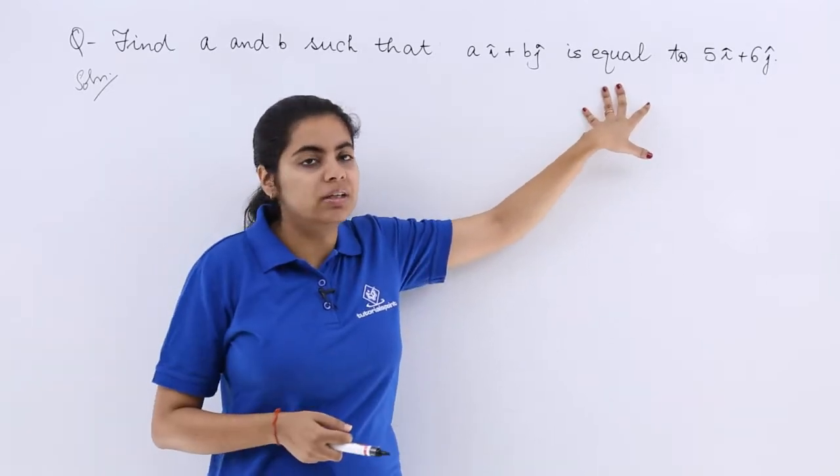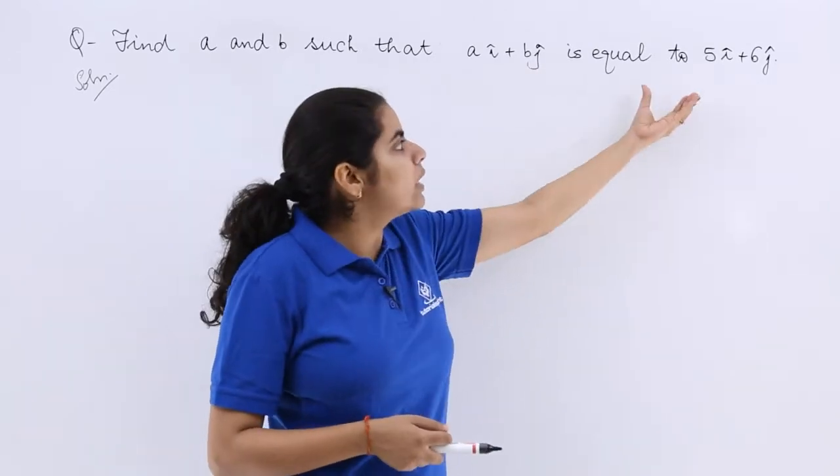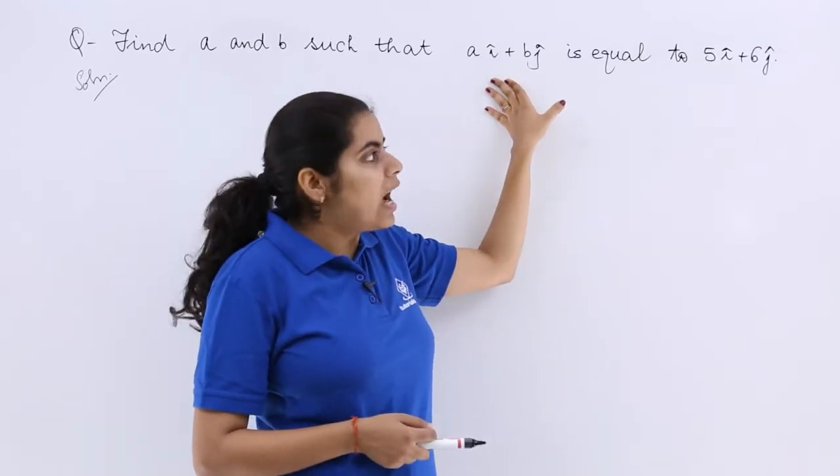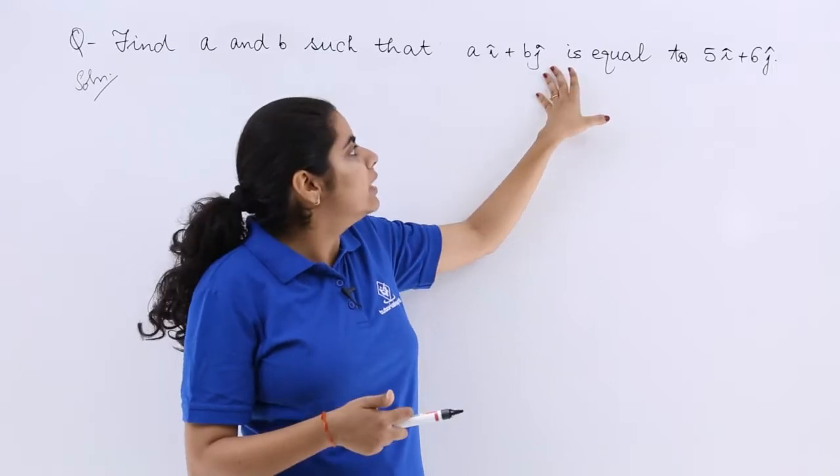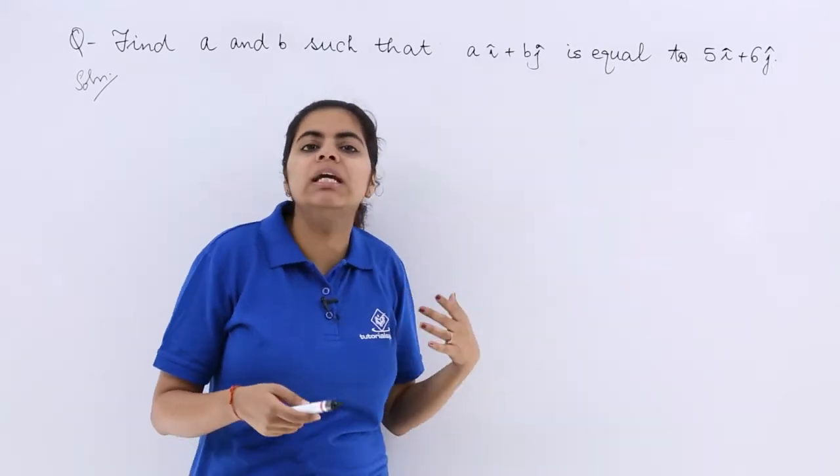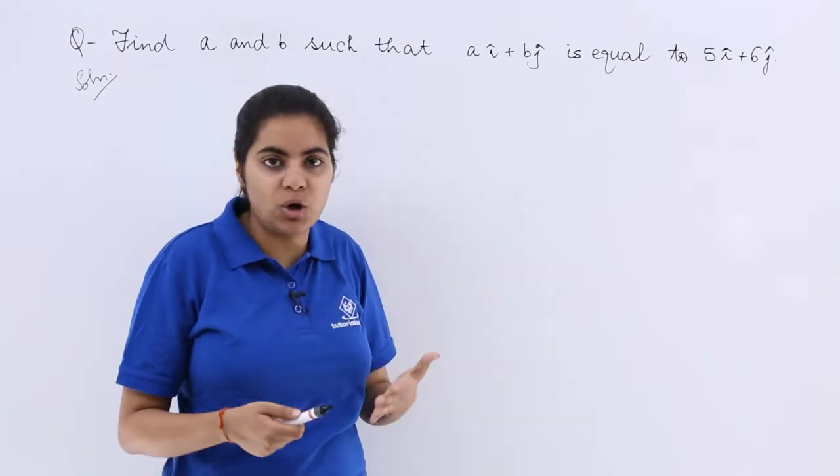So I have the solution written and I know that if I have to consider these two vectors as equal, their i cap coefficients must be equal, their j cap coefficients must be equal. That means we have to talk about the x axis and y axis components.